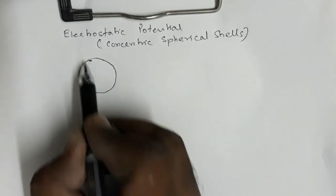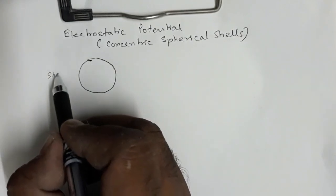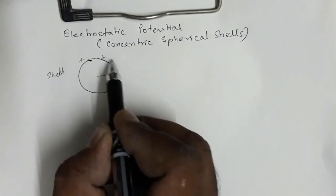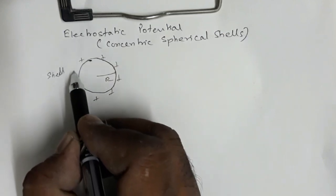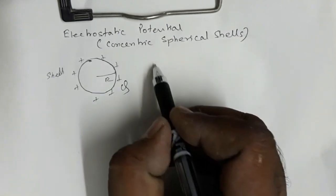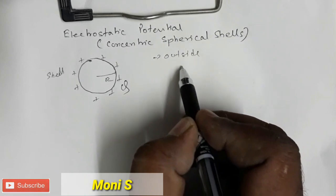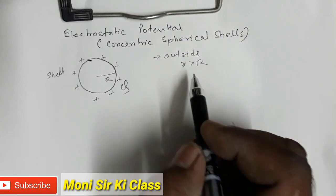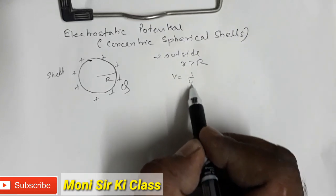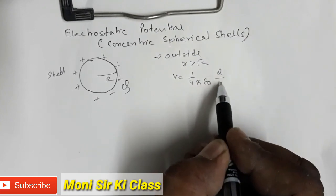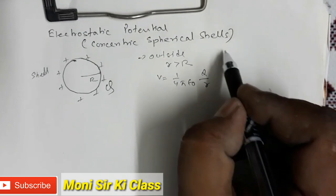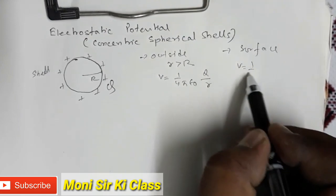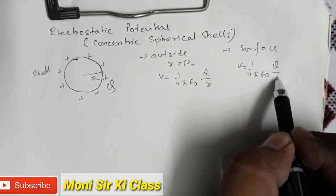For a spherical shell — a hollow sphere of radius capital R — if it is charged, the charge will be on the surface. Suppose capital Q is the charge. At any point outside the shell at a distance r greater than R, the potential is (1/4πε₀)(Q/r). On the surface, the potential is (1/4πε₀)(Q/R).